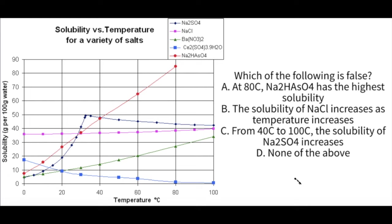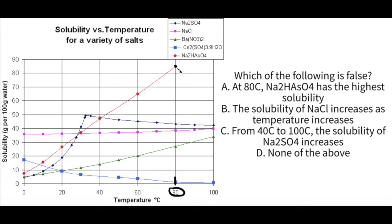The best way to approach a question like this is to look at each answer choice and use process of elimination. At 80 degrees Celsius, Na2HAsO4 is the red line. Tracing up at 80 degrees, the red line's solubility is between 80 and 90 — by far the highest. So this is a true statement. We're looking for what's false, so we rule out A.